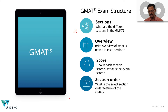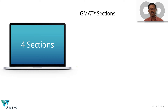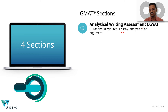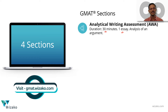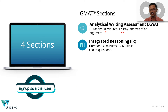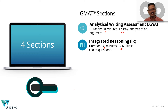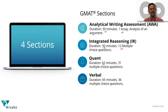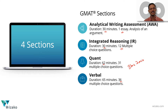The GMAT examination comprises four sections, not necessarily appearing in the order I'm stating. The first is Analytical Writing Assessment, or AWA — 30 minutes. The next is Integrated Reasoning, or IR — also 30 minutes, with 12 multiple choice questions. Then the Quantitative Reasoning section — 62 minutes, 31 multiple choice questions. And lastly, the Verbal section — 65 minutes, 36 multiple choice questions. The total duration of all four sections is 3 hours and 7 minutes, excluding optional breaks.